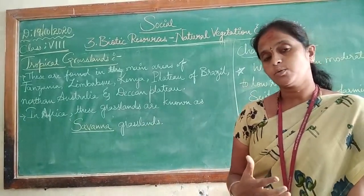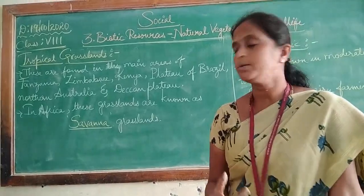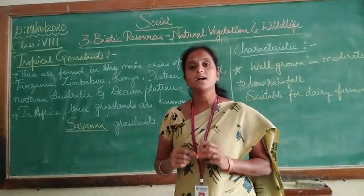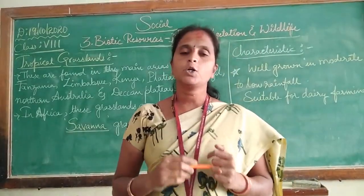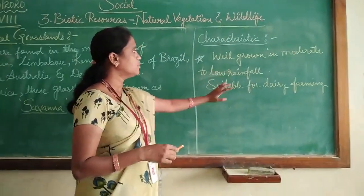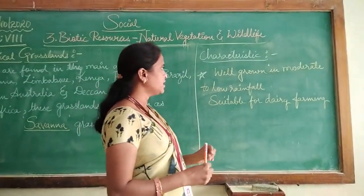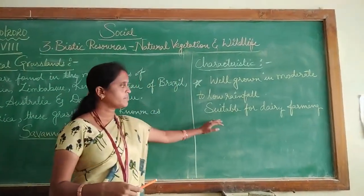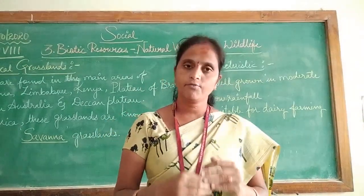Just as temperate grasslands are known by different names in the world, in Africa these tropical grasslands are known as savannas. The tropical grasslands of Africa are known as savanna grasslands. They are well grown in moderate to low rainfall, and they are suitable mostly for dairy farming.